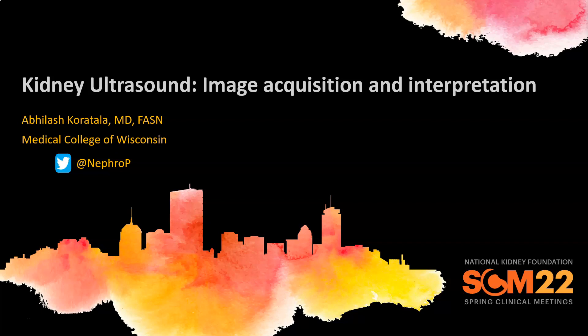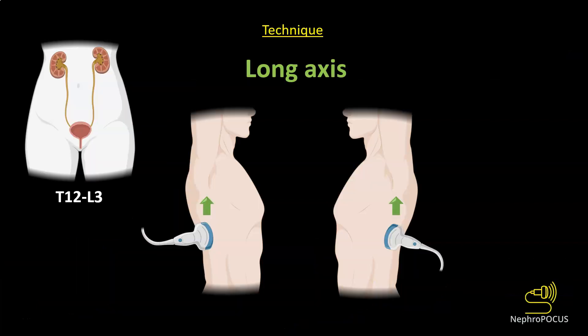In this video, I will talk about image acquisition and interpretation of kidney ultrasound. Kidneys span approximately from T12 to L3 vertebral level. To obtain a long axis view of the kidney, the transducer is placed at the junction of the sub-xiphoid line and anterior axillary line or the posterior axillary line, with the probe orientation marker towards the patient's head, and from there the transducer is fanned slightly posteriorly to get the kidney into view.